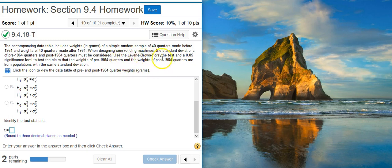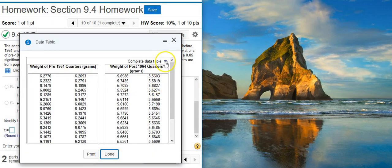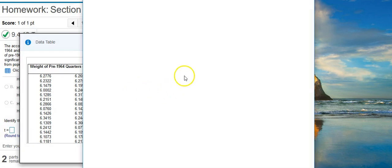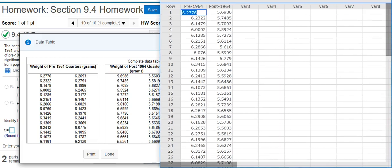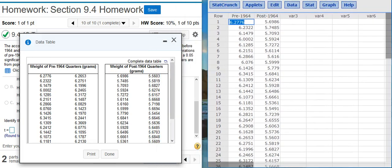So what is the Levene-Brown Forsythe test? Well, that's a test where you transform the data using the median value of each of your samples. And then with the transformed data, you perform an independent t-test. So that's what we're going to do to get our test statistic here for this second part. Of course, the first step to do that is to dump the data into StatCrunch. So here we can dump the data into StatCrunch.